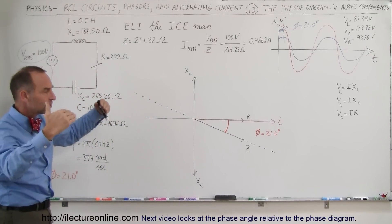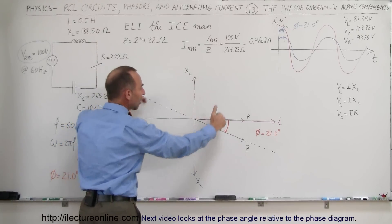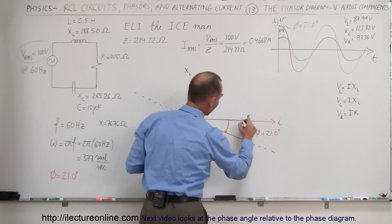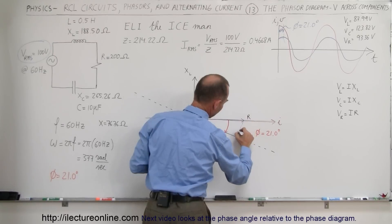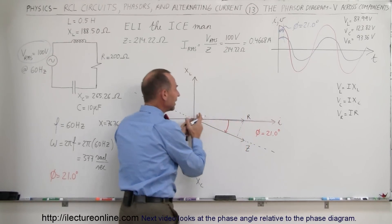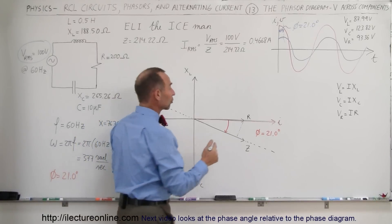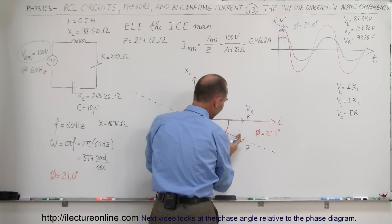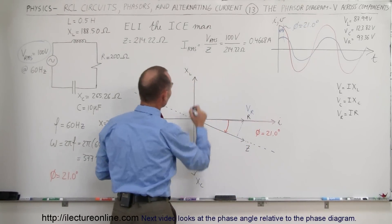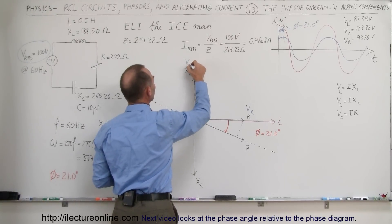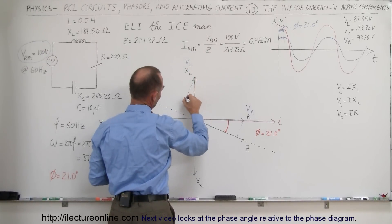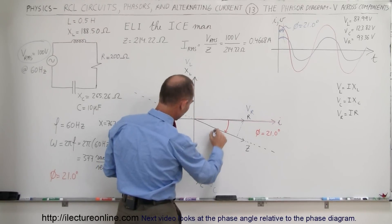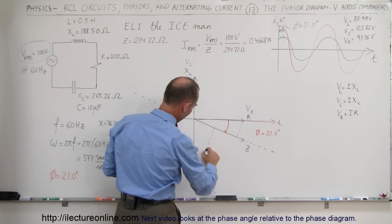What we're going to do now is project the three vectors onto the line represented by the impedance of the circuit. When we project the resistance vector, the length of these vectors can also represent the actual voltages across them. This would be the voltage across the resistor, projected onto the line represented by the impedance. This here represents the voltage of the inductor, projected onto this line. And this represents the voltage across the capacitor, projected onto the line set up by the impedance.